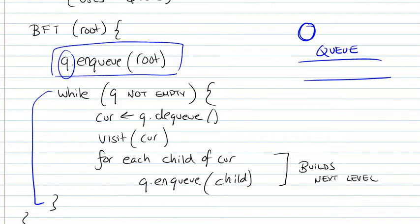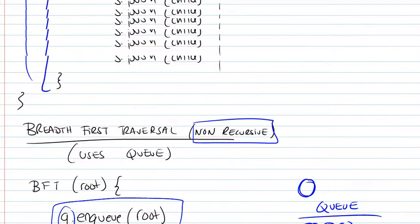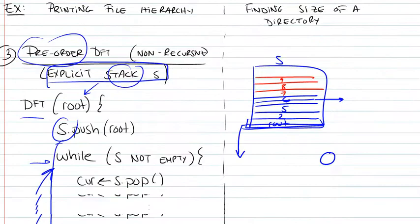So if this was the queue, we first had the root, we took it out, and now we have its children. So in this case, it's going to be 2, 5, 6.